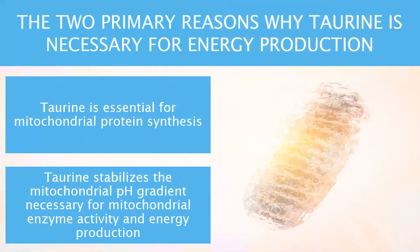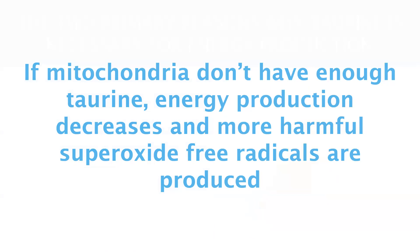There are two primary reasons for this. First, taurine is essential for mitochondrial protein synthesis, and second, taurine stabilizes the mitochondrial pH gradient necessary for mitochondrial enzyme activity and energy production. If mitochondria don't have enough taurine, energy production decreases and more harmful superoxide free radicals are produced. In fact, taurine's antioxidant effects are entirely due to enhancing oxygen consumption and energy production within mitochondria, not by the classical means of directly neutralizing free radicals.